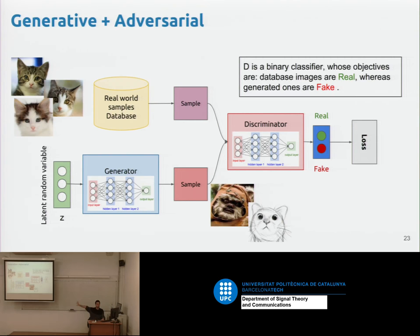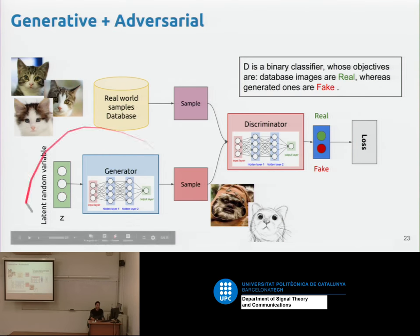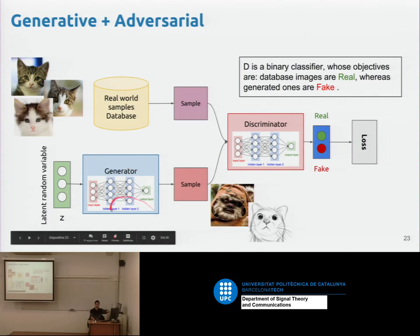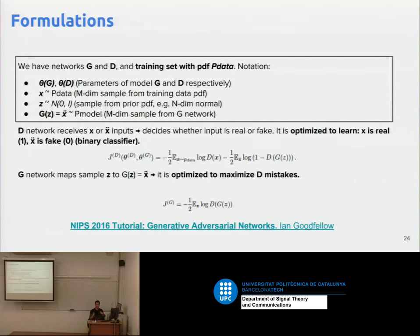Here's the full framework: we have real world images sampled and a generator that goes from Z to something random at the beginning. During training, the discriminator says 'you're real, you're fake' to every input. It's trained such that whenever a generator sample is input, it says fake; whenever it's real input, it says true. When the generator is trained, it tunes its weights to make the discriminator say 'I am real.'